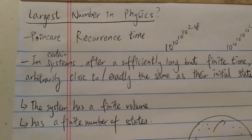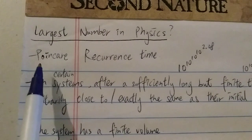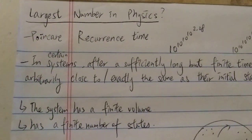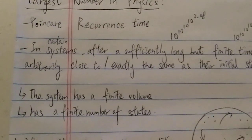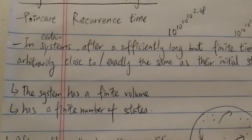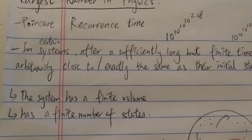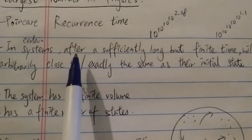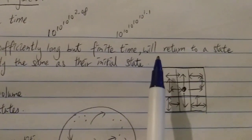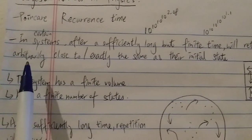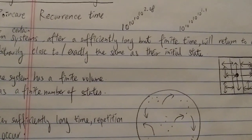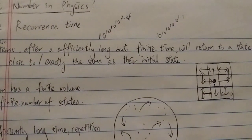This number is called the Poincaré recurrence time. The Poincaré recurrence is based on the Poincaré recurrence theorem, which states that in certain systems, after a sufficiently long but finite time, the system returns to a state arbitrarily close to, or exactly the same as, its initial state.